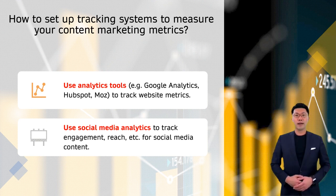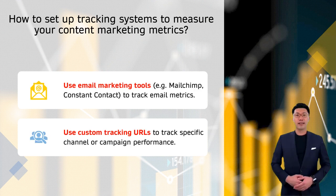The second step is to use social media analytics. Most social media platforms offer their own analytics tools that allow you to track engagement, reach, and other metrics for your social media content. The third step is to use email marketing tools, such as MailChimp or Constant Contact, that offer analytics to track email open rates, click-through rates, and other metrics.